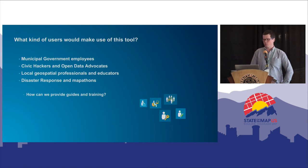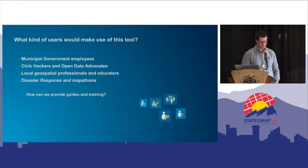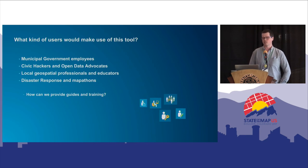Types of users would include municipal government employees and GIS analysts, civic hackers and open data advocates familiar with REST services, and local GIS professionals. There's also a great use case for disaster response, working with HOT and mapathons. I did a fair amount of digitizing in South Florida as part of the hurricane response in HOT tasks, and there were areas of new development where I knew that data was in an existing GIS database somewhere — it would be great to use that rather than redrawing buildings that already existed.